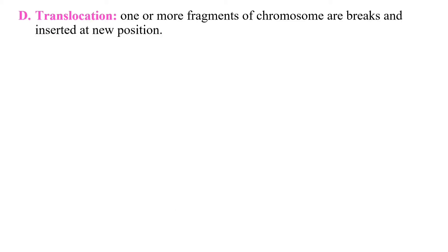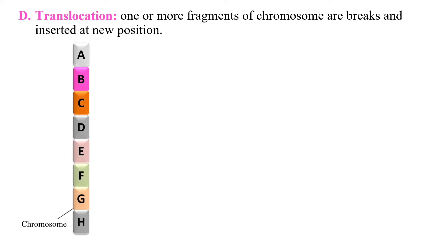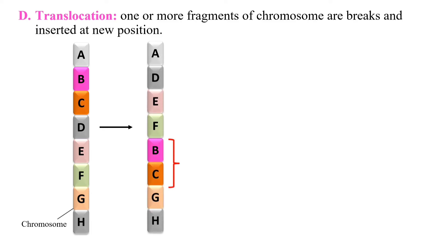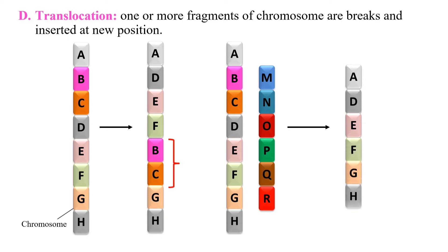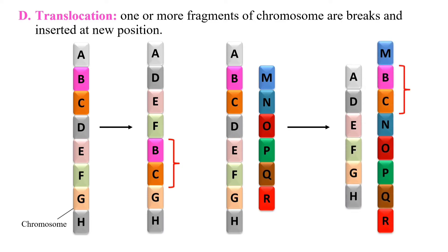Translocation is when one or more fragments of a chromosome break off and are inserted at a new position. For example, the B and C portion can break from the parent chromosome and change position. In two chromosomes, segment B can get exchanged between them. This translocation may also be responsible for somaclonal variations.